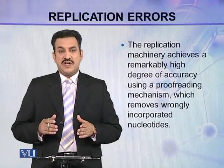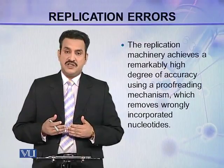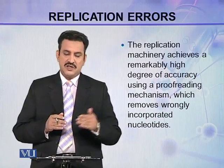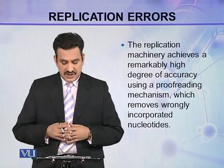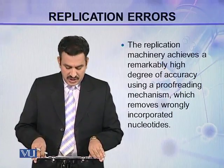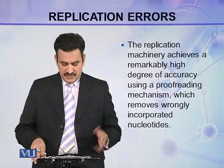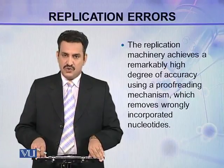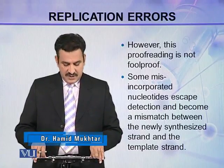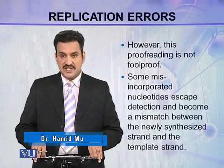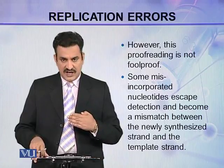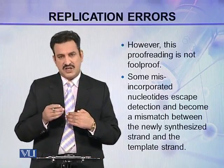Replication is a very intricate process and there are many chances of a mistake. Sometimes some wrong nucleotides are incorporated in the new strand. However, the replication machinery achieves a remarkably high degree of accuracy using a proofreading mechanism, which removes wrongly incorporated nucleotides. But this proofreading is not foolproof — some misincorporated nucleotides escape detection and become a mismatch between the newly synthesized strand and the template strand, so there may occur some mismatches.